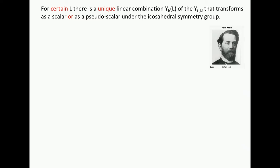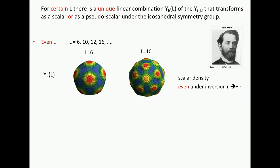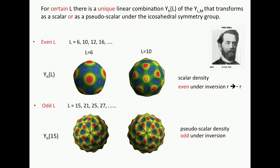I'll tell you in a moment what I mean with scalar and pseudo-scalar. So if you take even L, like L equals 6 by Nelson and the quasicrystals and supercooling, then it's even under inversion. If you go from R to minus R, then you get basically the same density. So that's L equals 6. This is L equals 10. And they become progressively more complex. And for odd L, you have 15, which we just discussed. 21, which Sergei discussed. 25, 27, these are pseudo-scalar densities because they're odd under inversion.